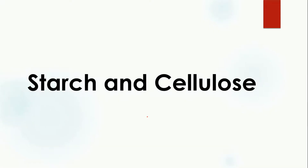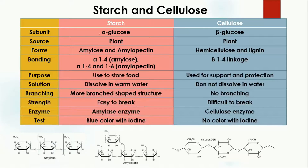Welcome to Ahmad Coaching. I'm your teacher Dr. Anam. Today we will study about starch and cellulose. Starch is made up of alpha glucose subunits while cellulose is made up of beta glucose subunits.